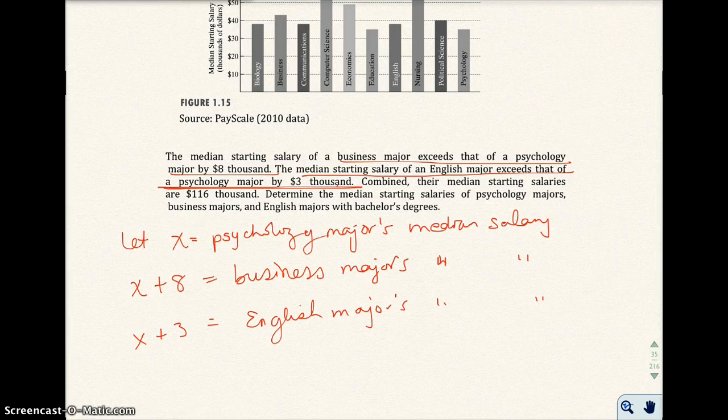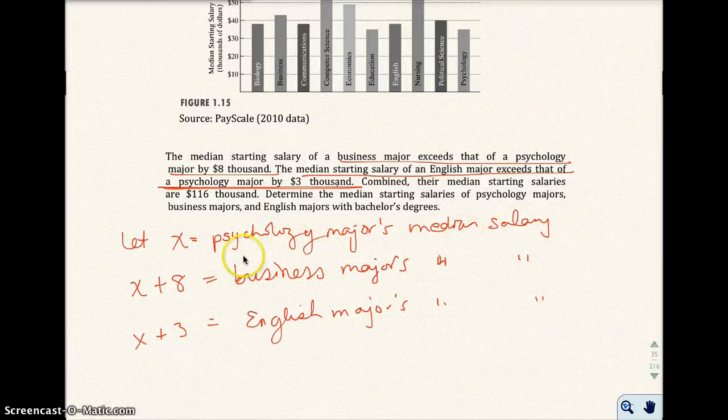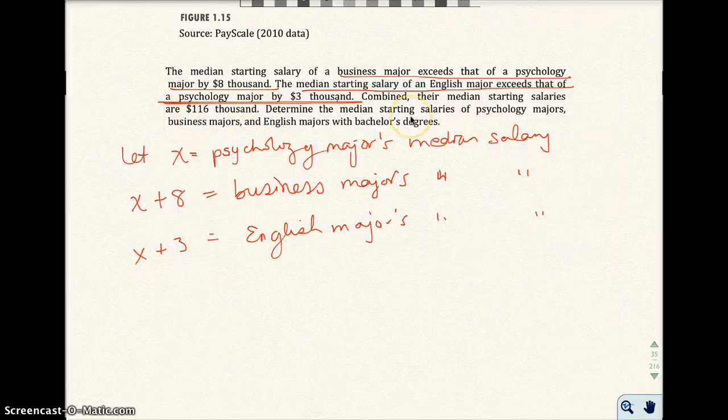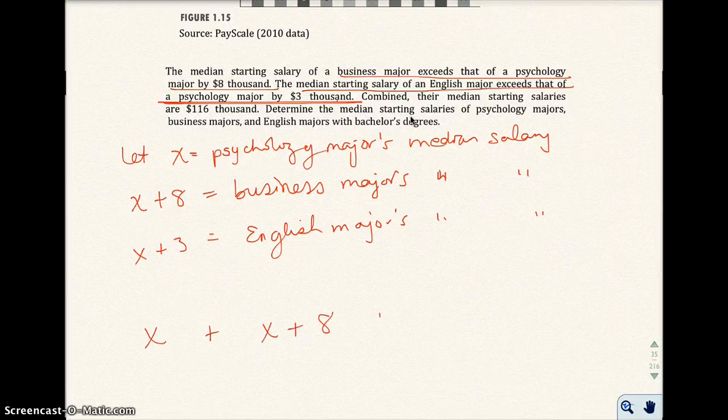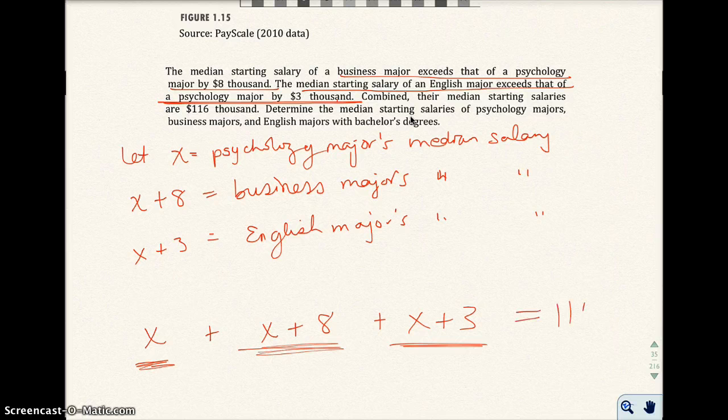We have three expressions and each expression represents each major's median salary: psychology, business, and English. Now the last sentence says combined their median starting salary are $116,000. So if I take the psychology majors and I add on the business majors and I add on the English majors, the total should be $116,000.